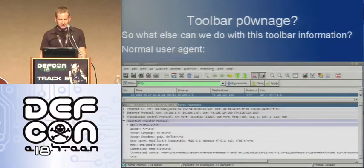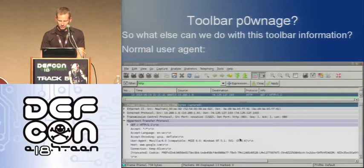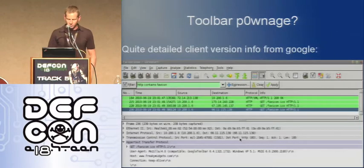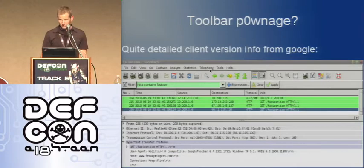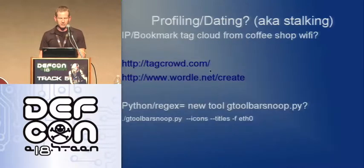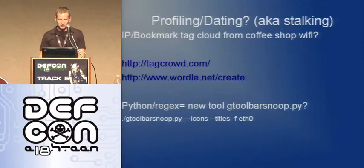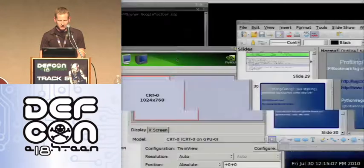What else can we do with all this information? Here's a normal user agent from a browser — Mozilla 4, IE 6 — and it even says Google Toolbar 6.4. But then let's look at a user agent from the Google toolbar itself: Google Toolbar 6.4.1321.1731. It also tells you the exact version of Microsoft Internet Explorer. Once you know this information, you can start to figure out what vulnerabilities that guy's got. And if you can actually get at the XML, I thought you could do some tag cloud bookmarking if you're just sitting on your coffee shop Wi-Fi. So I took some time with Python and created a new tool to see what I could get out of that.